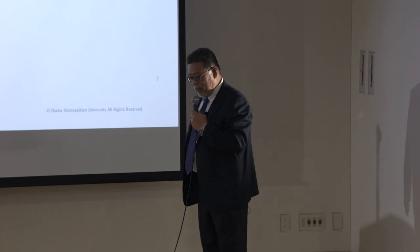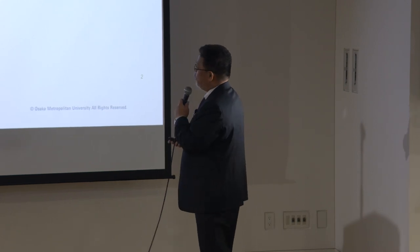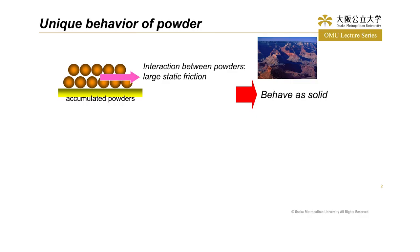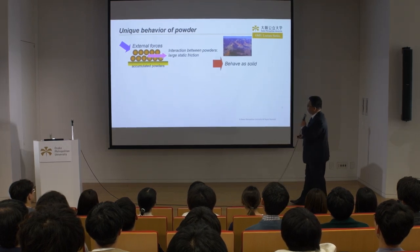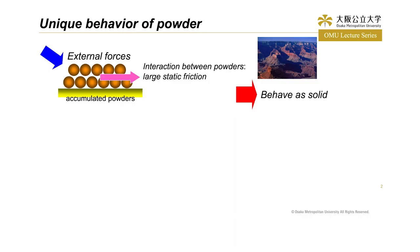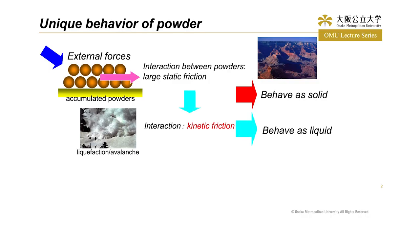However, a powder shows very unique behaviors. Let me explain about this. When we accumulate powder at rest, it behaves as solid. In this case, the interaction between powders is large static friction. Once accumulated powders receive large external forces, such as from an earthquake or something, the powder flows like a fluid. In this case, we can observe liquefaction or avalanche.